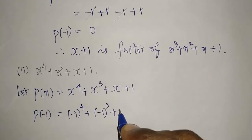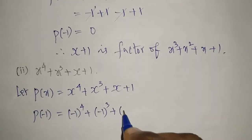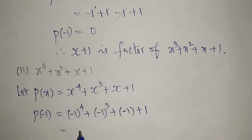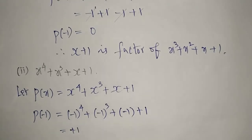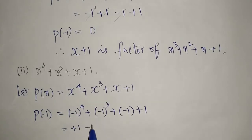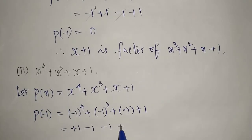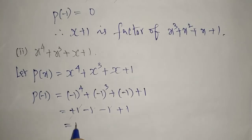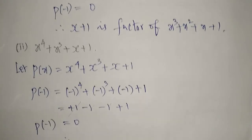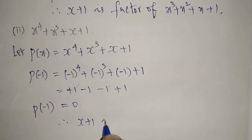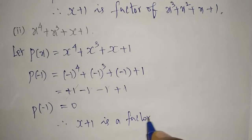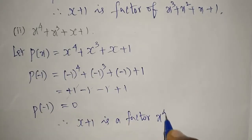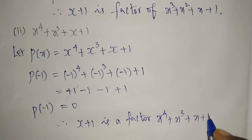Now (-1)⁴: the power is even, so we get +1. (-1)³: the power is odd, so we get -1. Then -1 + 1. The -1 and +1 cancel, and 1 - 1 = 0. Since we're getting 0, therefore (x+1) is a factor of the given polynomial x⁴ + x³ + x + 1.